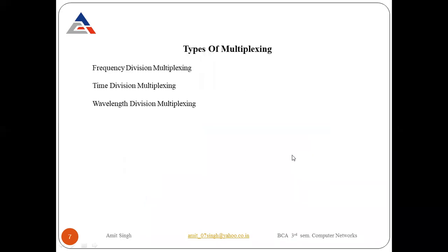Now we have three types of multiplexing. The first one is frequency division multiplexing, or FDM. The second is time division multiplexing, or TDM. And the last one is wavelength division multiplexing, or WDM.